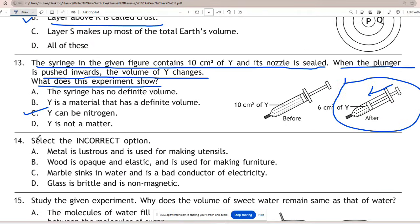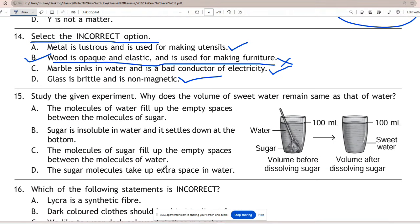Question 14: Select the incorrect option. The answer is B - wood is not opaque and elastic. This option is incorrect. Other options are correct. Option A, metal is lustrous and is used for making utensils, is correct. Marble sinks in water and is a bad conductor of electricity is also correct. Last, glass is brittle and is non-magnetic is also correct.